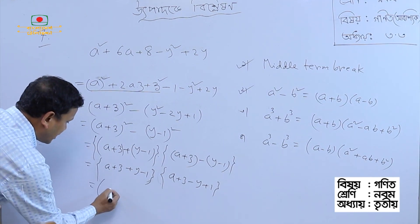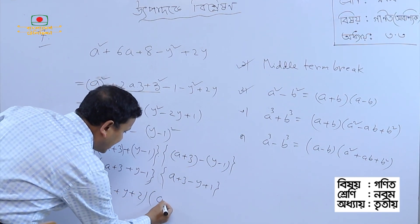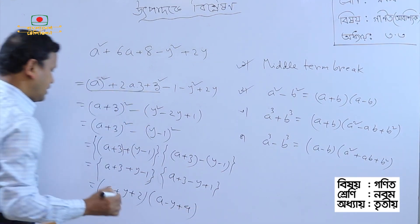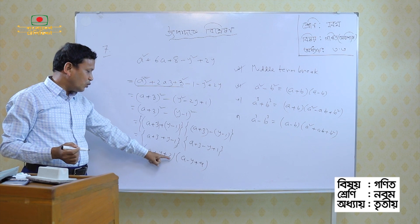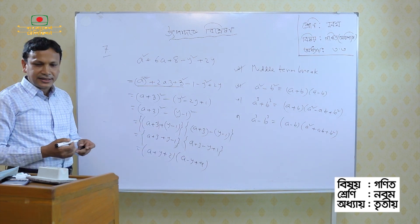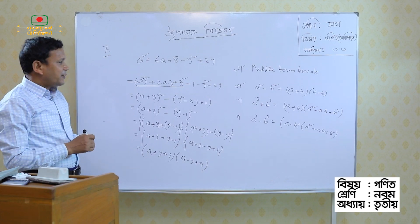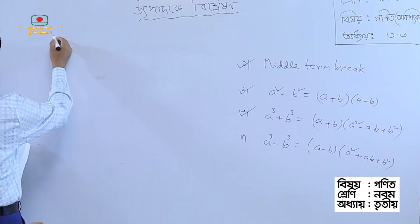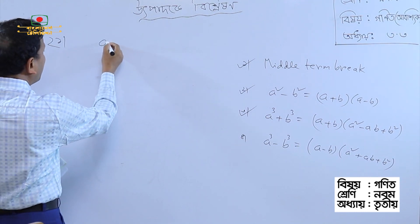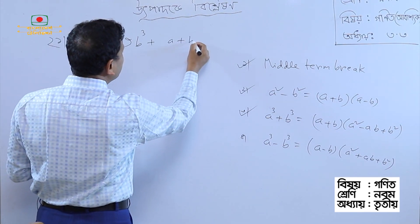I will say a plus three minus y plus one. So, I will say a minus y plus four. So, I will say a minus y plus four. Then I will say a minus b. Let me write it as: a minus b. Now this is a plus b. You will say a minus 1. So, I will say the minus will be, and then a minus b, b³ plus a plus b.